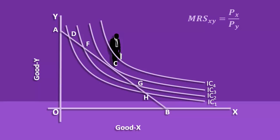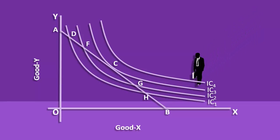Indifference Curve 3 is the highest possible Indifference Curve that the consumer can reach. Hence, C is the point of equilibrium. We also have to examine points G and H. We shall now make the consumer move from point B. He moves up to point H. Combination H is on Indifference Curve 1.